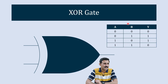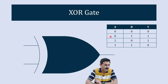Here you can see the truth table of XOR gate. These are the two inputs and this is the output. From this truth table it is very clear that when both inputs to the XOR gate are the same, the output is 0, and when both inputs are different, the output is 1.